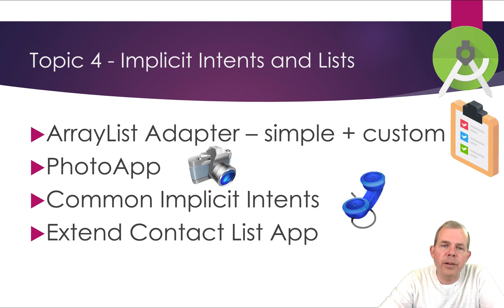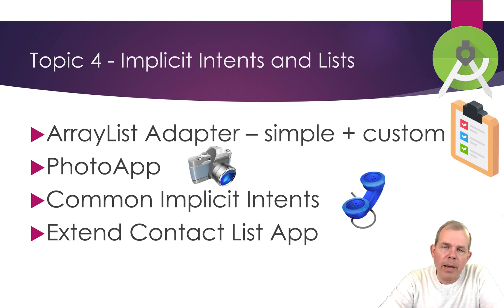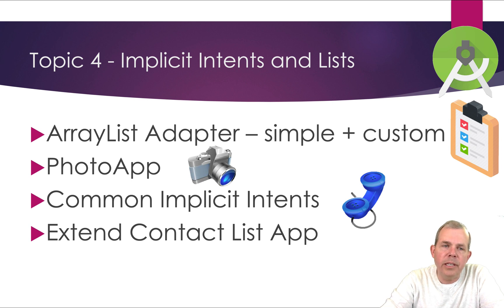In unit four, we'll talk about implicit intents in more detail. Implicit intents are different from explicit intents in that you can send a request to the Android operating system to perform an action. For example, suppose I ask the phone to take a photo — I don't have to redesign the entire photo app. I can just call the operating system with an implicit intent to say 'get me a picture,' and the photo app will automatically launch. The user selects a photo and it comes back to my program, letting me use many things already built into Android without redesigning from scratch. Common implicit intents include things like making a phone call — you simply supply a phone number and tell the operating system to complete the call.